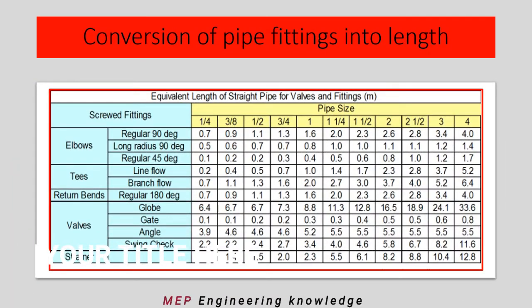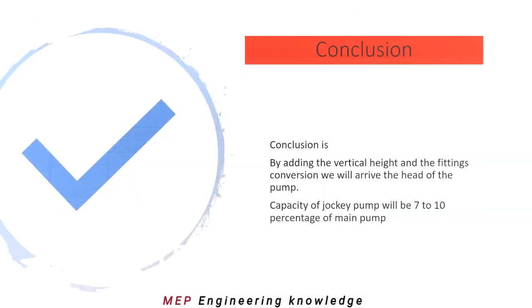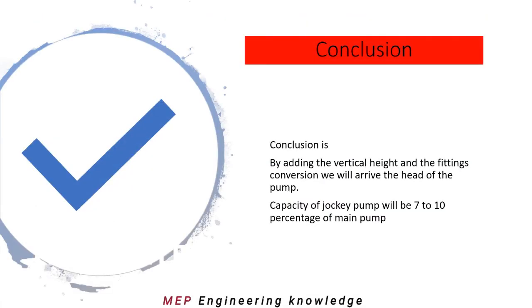Sample details are given — depending on the type of pipe and manufacturer, they will provide this in detail. Using this chart, you can convert fittings losses into length in meters. You can convert elbows, tees, return bends, valves, and strainers into equivalent length, which is then added along with the vertical length to achieve the total head.